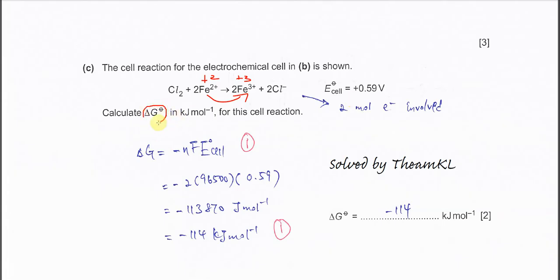Calculate the ΔG° for this cell reaction. You must remember this is the relation between the Gibbs energy and the E°cell. ΔG° equals negative nFE°cell. In this reaction, we know it involves two moles of electrons, so n equals 2. F is the Faraday constant, 96,500. You use the E°cell as given, 0.59. Substitute everything inside.